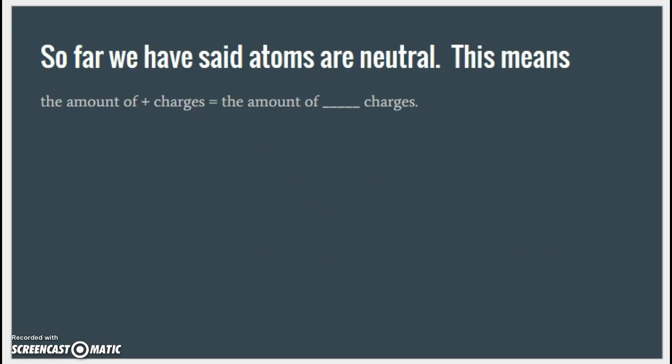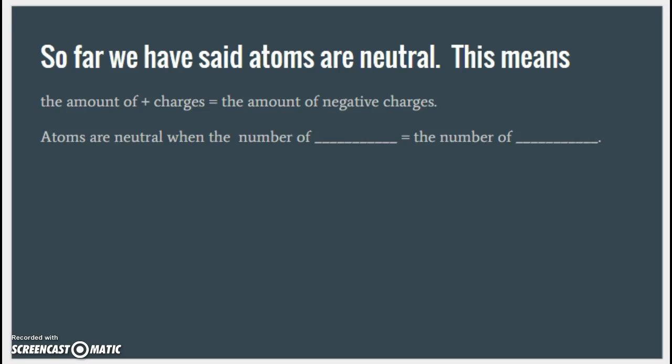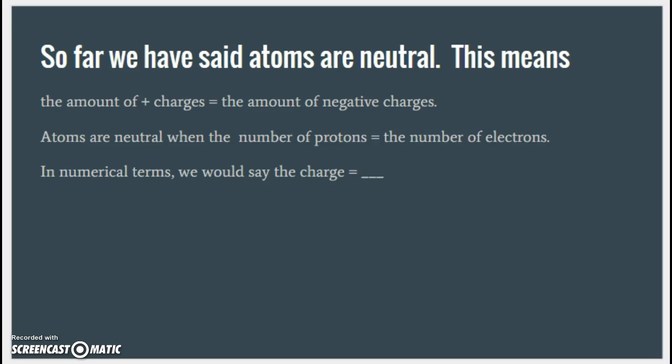So far we have said atoms are neutral. This means the amount of positive charges equals the amount of negative charges. Atoms are neutral when the number of protons equals the number of electrons. In numerical terms, we would say the charge equals zero.